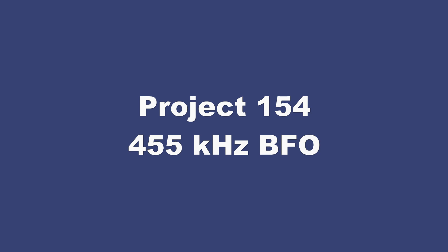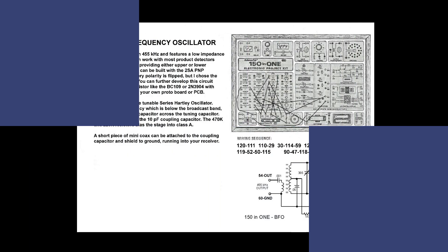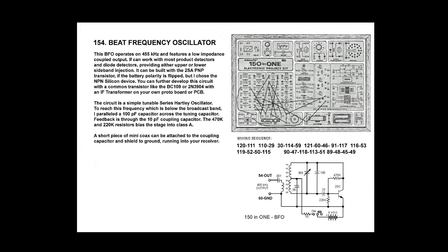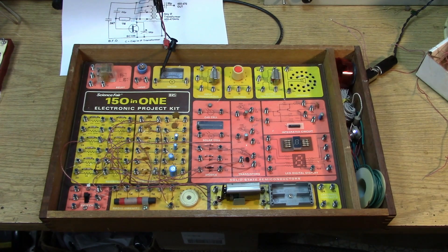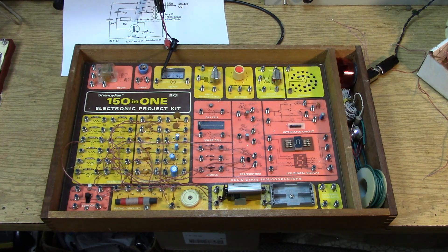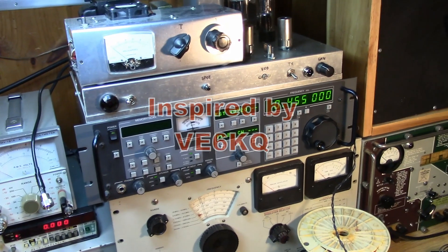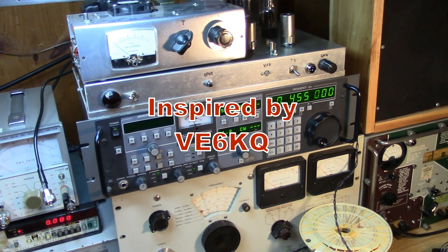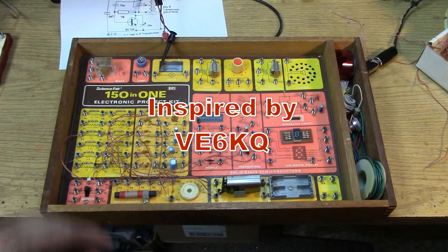So I was pretty sure that there were components to do some type of oscillator. But I was not sure if I could actually hit 455 kilohertz. Okay, I've got the 455 kilohertz BFO breadboarded. Seems very stable. It's tunable.